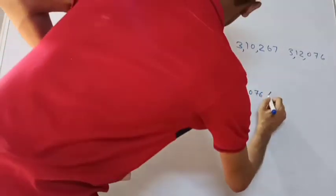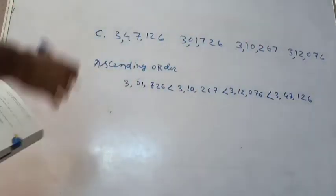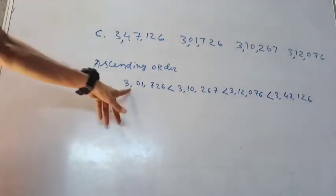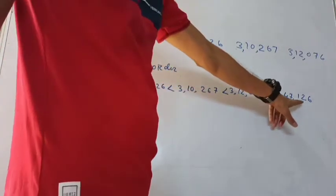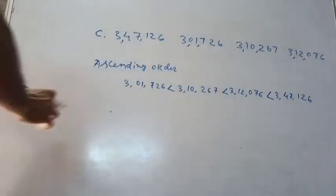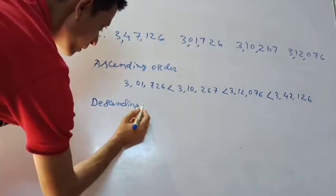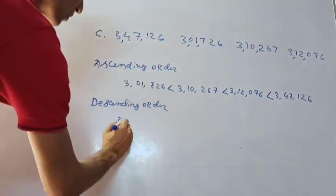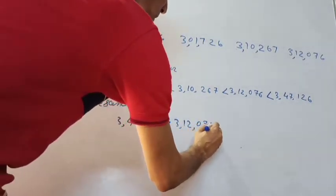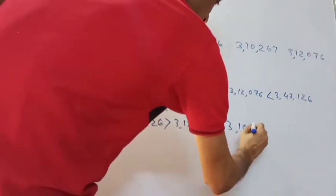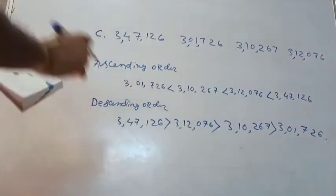Continuing the ascending order: 301,726 < 310,267 < 312,76 < 347,126. For descending order, just reverse: 347,126 > 312,76 > 310,267 > 301,726. So this is the complete ascending and descending order for those numbers.